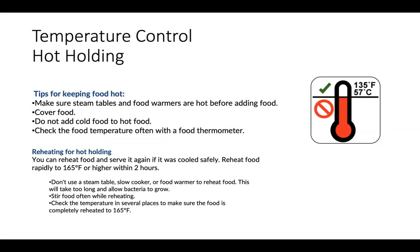Hot holding. Here are some tips to keep hot food at 135 degrees or hotter. Make sure steam tables and food warmers are hot before adding hot food. Cover the food with a lid or with a disposable food bag. Do not add cold food to already prepared hot food. Remember to check food temperature often with a food thermometer. Reheating for hot holding. You can reheat food and serve it if it was cooled safely. Reheat the food rapidly to 165 degrees within 2 hours. Do not use a steam table, slow cooker, or food warmer to reheat food — this will take too long and allow bacteria to grow. Stir the food often while reheating. Check the temperature in several places to make sure that the food is completely reheated to 165 degrees before placing it in a food warmer.